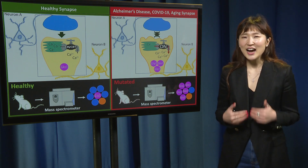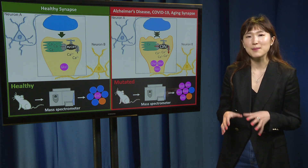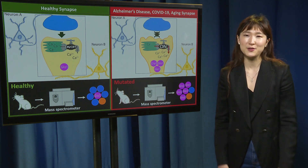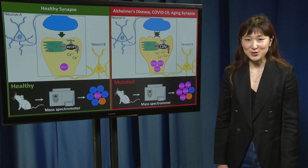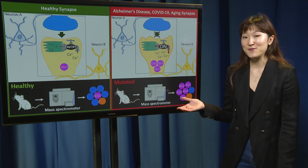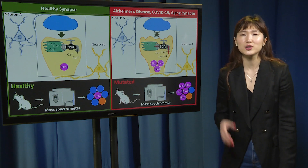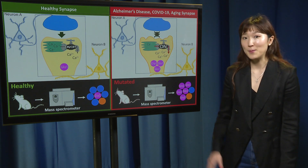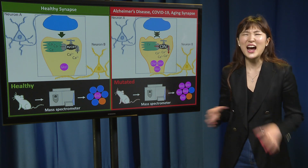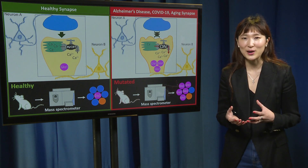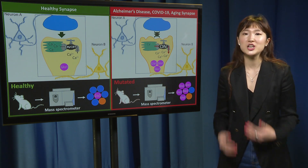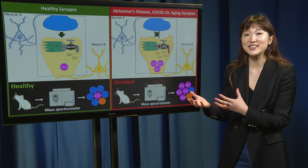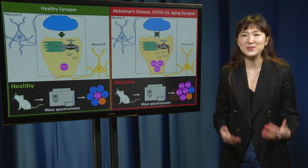To answer this, I decided to examine the proteins that make up the synapse, as proteins are the building blocks for synaptic function and health. I use a genetically modified mouse with a mutation in this receptor, which mimics the leaky calcium faucet. From healthy and mutated mice, I isolate the synapses from their brains and feed them through a machine called a mass spectrometer, allowing me to compare what proteins and how many of them make up these synapses.